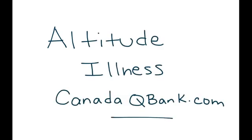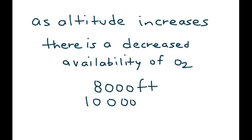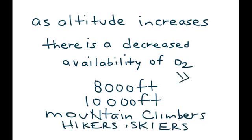Altitude illness is the topic for this video. Altitude illness occurs because there is a decreased availability of oxygen, and this occurs as altitude increases — 8,000 feet, 10,000 feet, very high altitudes. This essentially involves people like mountain climbers, hikers, and skiers, and it eventually leads to hypoxemia.